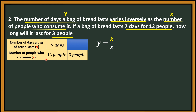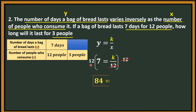Let us use the first column. Y is 7 and X is 12. So that is: 7 is equal to K over 12. Then multiply both sides by 12 to solve for K — you can cancel 12, and on the right side, K remains. Then 12 times 7 is 84. This is now the constant.